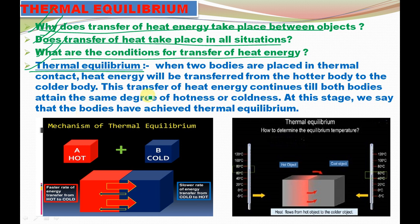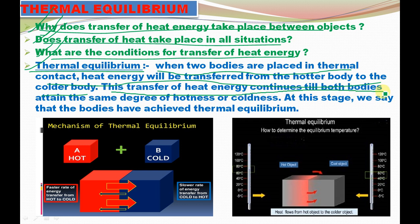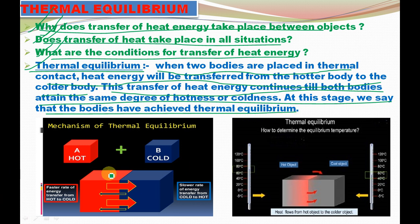What is thermal equilibrium? When two bodies are placed in thermal contact, heat energy will be transferred from the hotter to the colder body. This transfer of heat energy continues until both bodies attain the same degree of hotness or coldness. At this stage, we say that the bodies have achieved thermal equilibrium — the stage at which both bodies attain the same temperature.